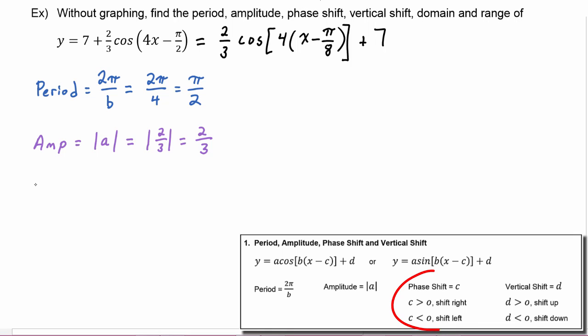Next is phase shift. And we know that comes from letter C. And C, in this case, is what comes after the minus sign. So after the minus sign, there is a π over 8. So that means the graph is going to shift π over 8 to the right. The vertical shift is equal to letter D. And D is what comes after a plus sign. So D is equal to 7, which means the graph is going to shift up.